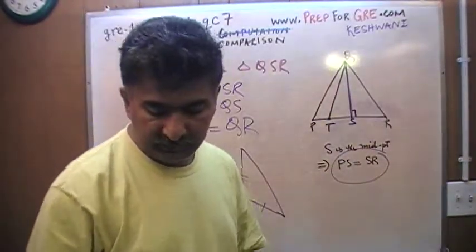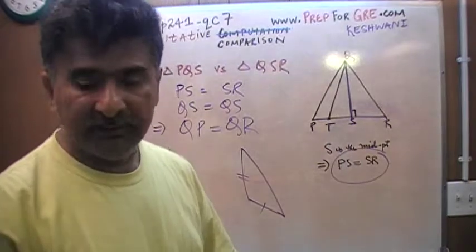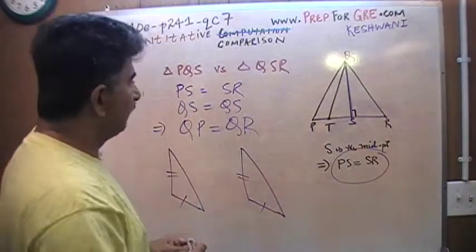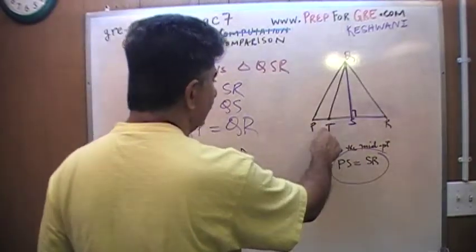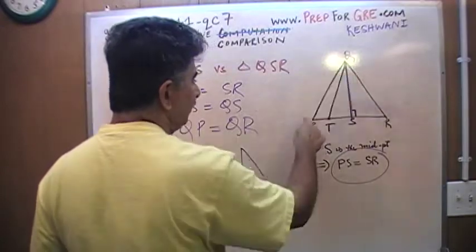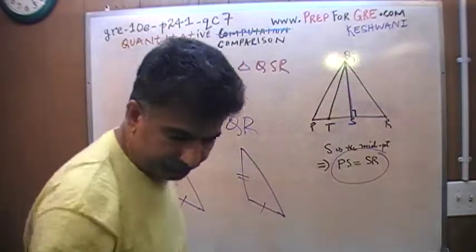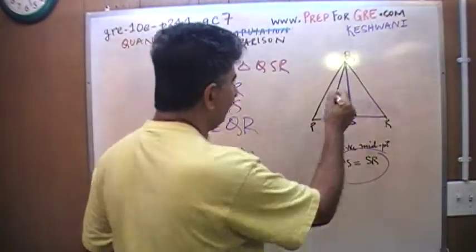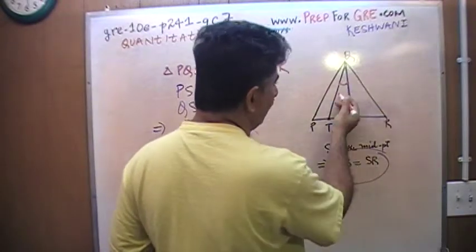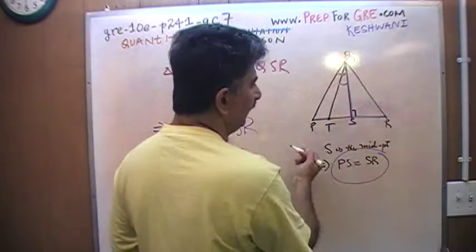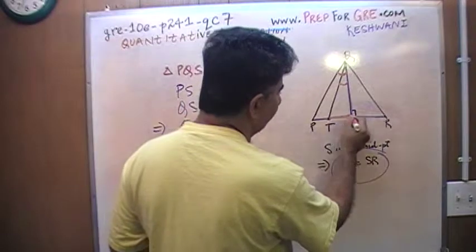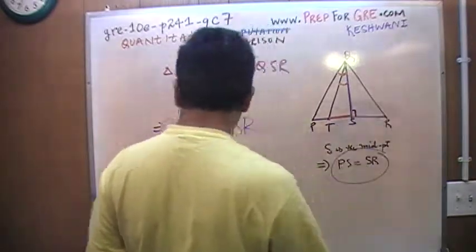They can immediately see that the length of Q to T is less than the length Q to R, because Q to T is going to be less than Q to S, because this triangle here is smaller than this triangle up here.